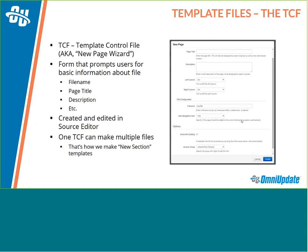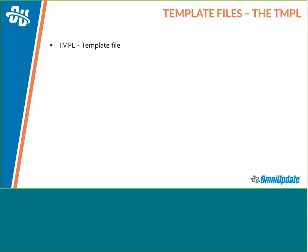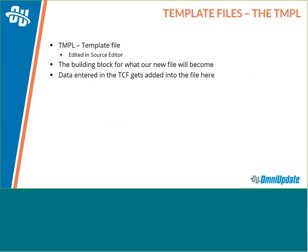The second thing is the TMPL — our third file. TMPL is short for template, and it's a text file that's edited and managed within the source code editor. What the TMPL is, is ultimately the building block for what our new file will become. Depending on what type of file we're trying to make, the TMPL could look totally different. What's really cool is that the data you entered inside of the new page wizard gets added into the template file, and the specific information — like file name and page title — gets entered into the appropriate locations inside of the TMPL.